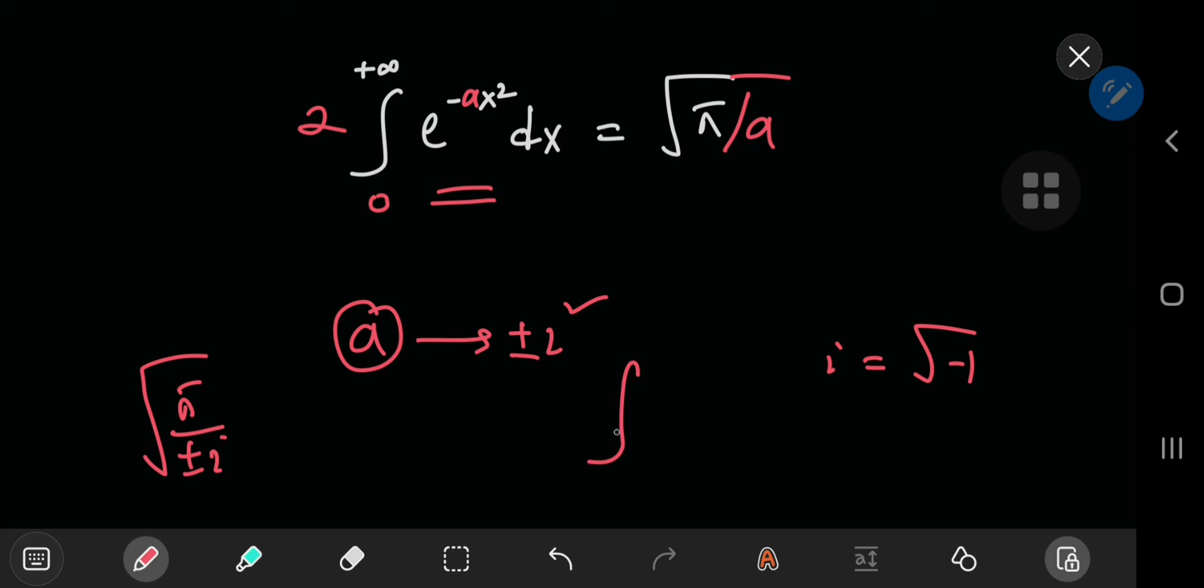So we're going to be integrating from zero to infinity e to the positive and negative ix squared. And in my previous video on the Fresnel integrals, we already covered the case of e to the negative ix squared. However,